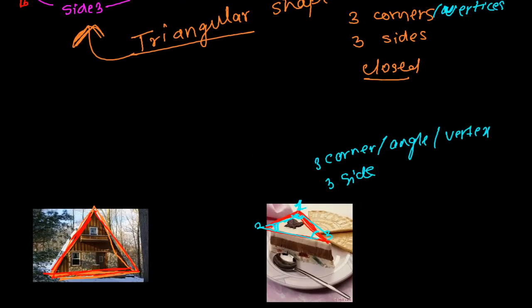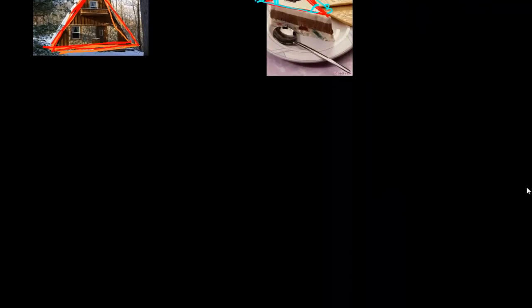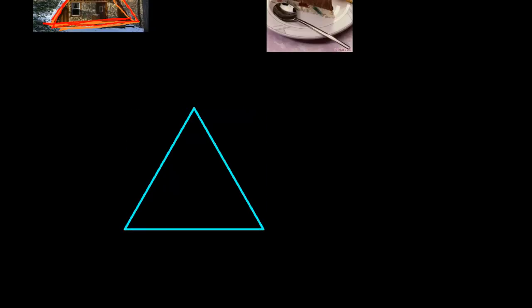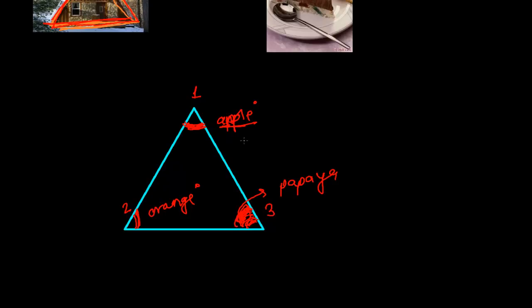Now I want to tell you something more about triangles. Suppose I have a triangle and I measure each angle with a protractor. I might get different values — let me call them 'apple degrees,' 'orange degrees,' and 'papaya degrees.' Whatever the values are, the sum of all these angles will always be 180 degrees. This is a must condition.